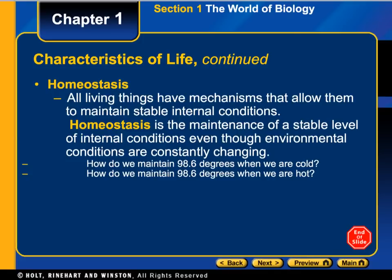Homeostasis is a huge property of life. All living things must be able to maintain their internal conditions, and homeostasis is how they do that. We can maintain 98.6 degrees whether we are cold or hot, so thinking about how we do that will help you understand what homeostasis is.